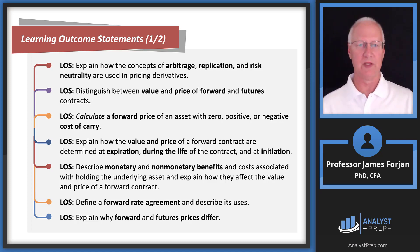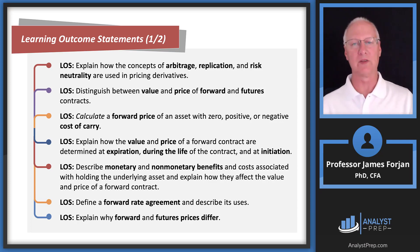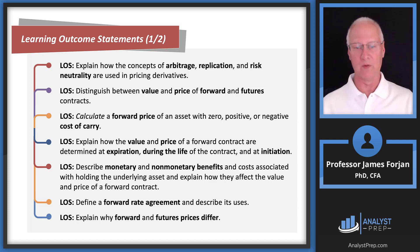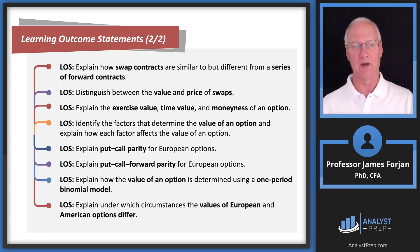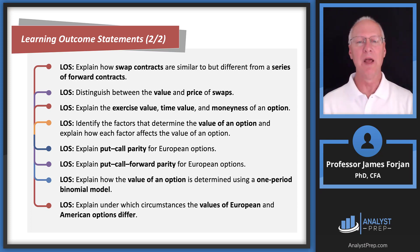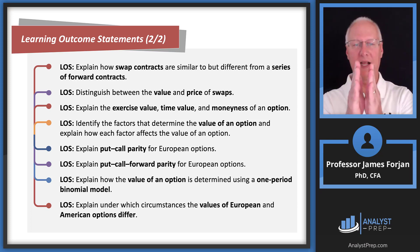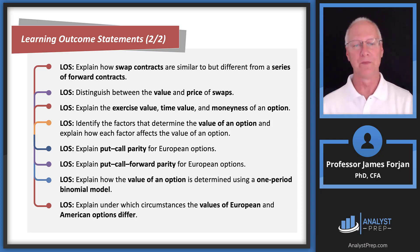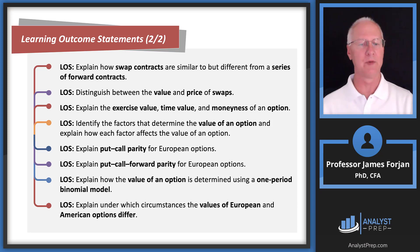Notice what the LOSs tell us: distinguish between value and price — that's important. We'll do some arbitrage, talk about a forward rate agreement, forward contracts and futures contracts, and swap contracts. At Level 1, swap contracts take up a small amount of space, but at Level 2 they take up a lot more. Then we'll end with a discussion on option contracts.